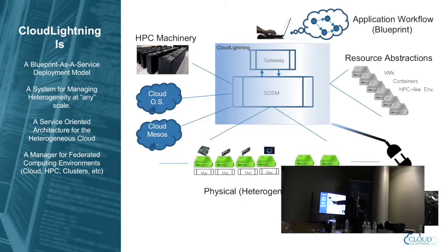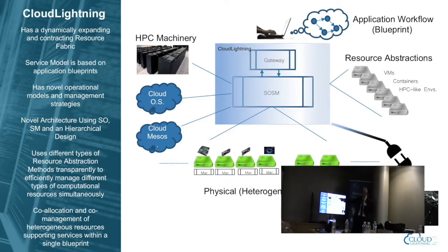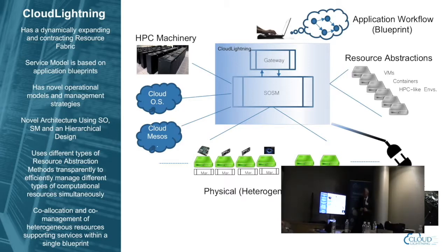So we have a general system for managing heterogeneity. That's what Cloud Lightning is. It has a dynamically expanding and contracting resource fabric — these things can come and go, typically just coming unless you're putting things down for maintenance. There's a service model based on application blueprints — that's how we interface with our users and that drives separation of concerns. It has novel operational models and management strategies based on self-organization and self-management.